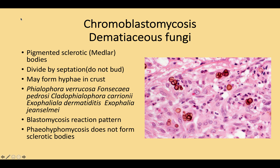Chromoblastomycosis is classified along with the other pigmented fungal infections, sometimes known as dematiaceous fungi. All this really means is that they're pigmented. Chromoblastomycosis typically divides by internal septation, giving this characteristic appearance of sclerotic bodies — sometimes called medlar bodies after their first description from a case reported from Boston.